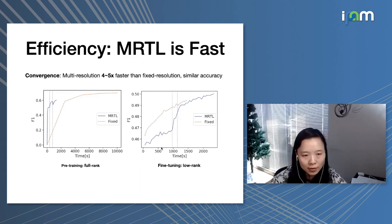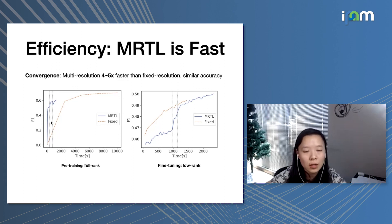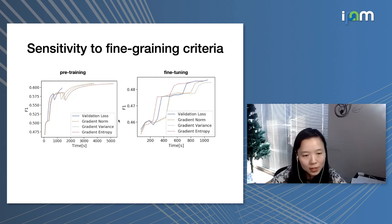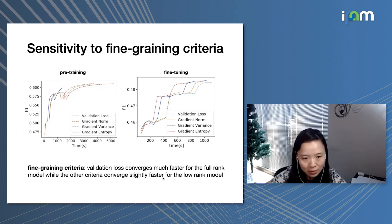Experimentally, our method is much faster than the fixed resolution approach, both for the pre-training stage — learning a full-rank model — and the fine-tuning stage — learning a low-rank model. For both stages, the F1 score over time shows our multi-resolution model converges much faster, with different vertical lines representing different fine-graining stages. We also examined the effects of different fine-graining criteria: validation loss, norm of the stochastic gradient, variance, and entropy. In the full-rank model, validation loss converges fastest, but for the low-rank fine-tuning stage, the stochastic gradient statistics-based methods are slightly faster.